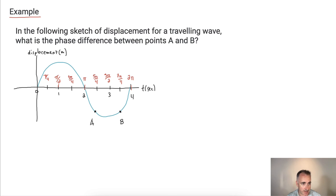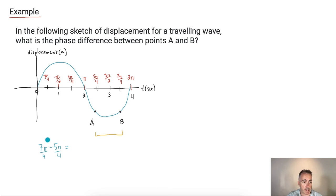Now it's a lot simpler. I can say: what's the distance between A and B? It's going to be 7π over 4 minus 5π over 4. The common denominator is good. What's 7π minus 5π? It's 2π. So I've got 2π over 4 — and 2π divided by 4 equals π over 2 radians. That's my final answer.